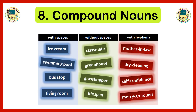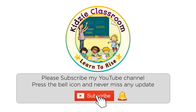Generally, compound nouns are categorized into three types. The first is compound nouns with spaces, the second is compound nouns without spaces, and the third is compound nouns with hyphens. Examples with spaces: ice cream, swimming pool, bus stop, and living room. Examples without spaces: classmate, greenhouse, grasshopper, and lifespan. Examples with hyphens: mother-in-law, dry-cleaning, self-confidence, and merry-go-round. These are the examples of compound nouns. We hope you liked the video — please subscribe to our channel. Stay blessed!